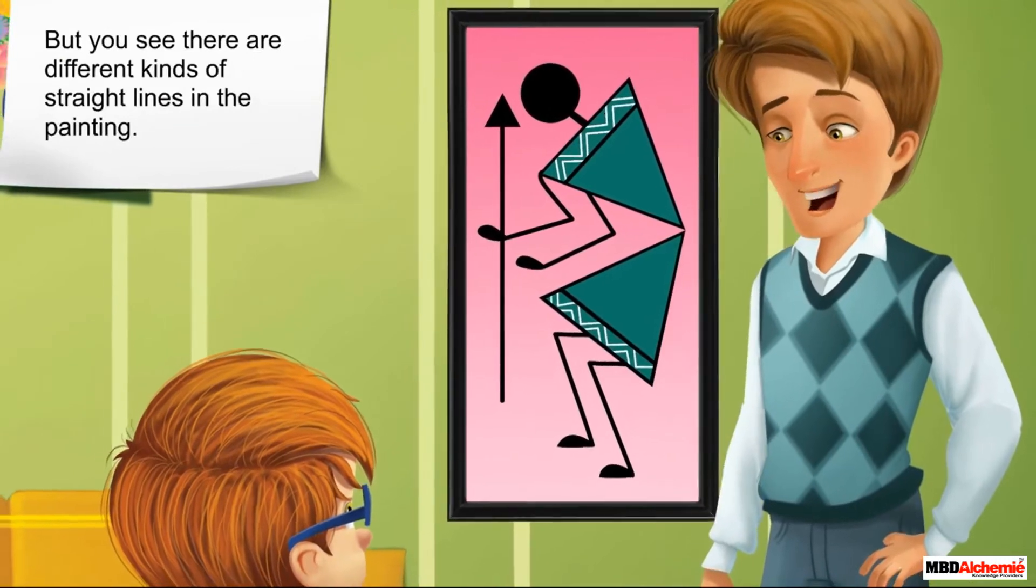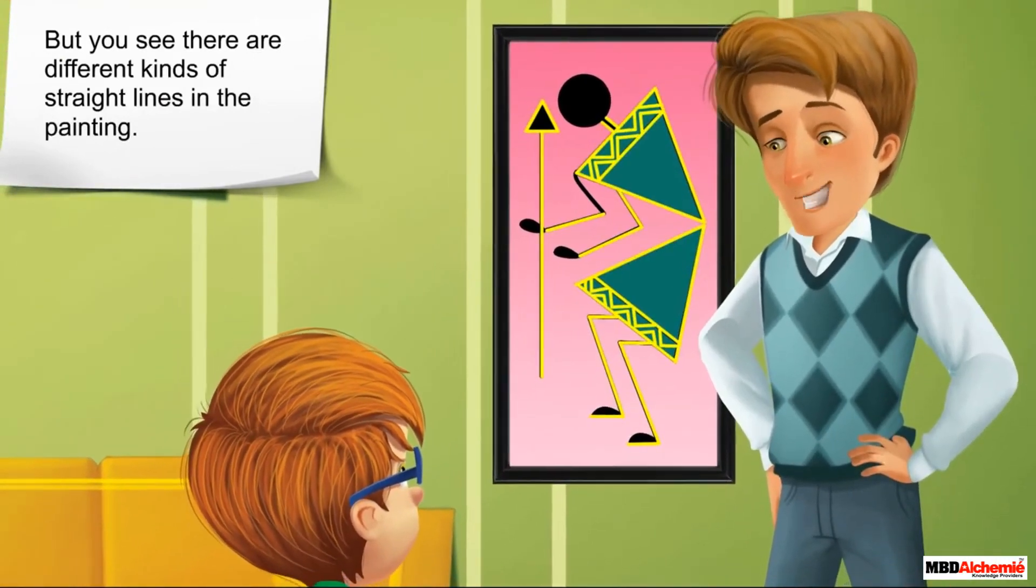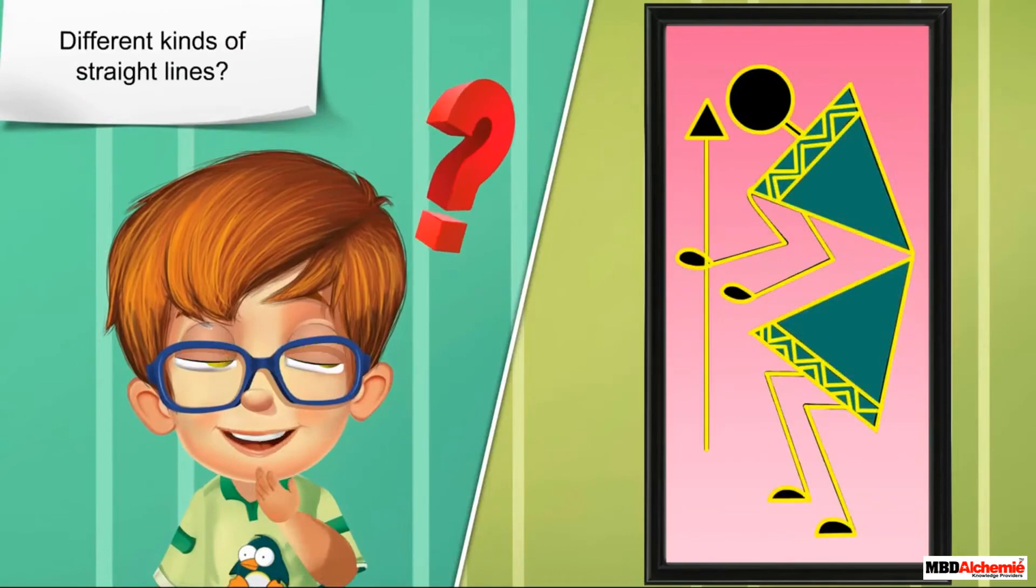But you see, there are different kinds of straight lines in the painting. Different kinds of straight lines?